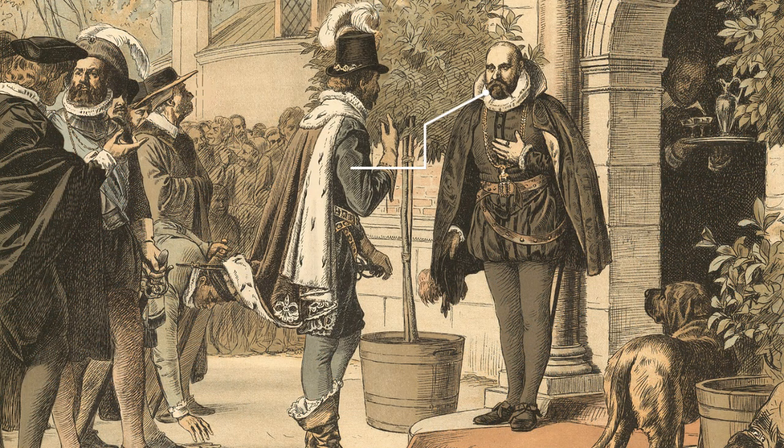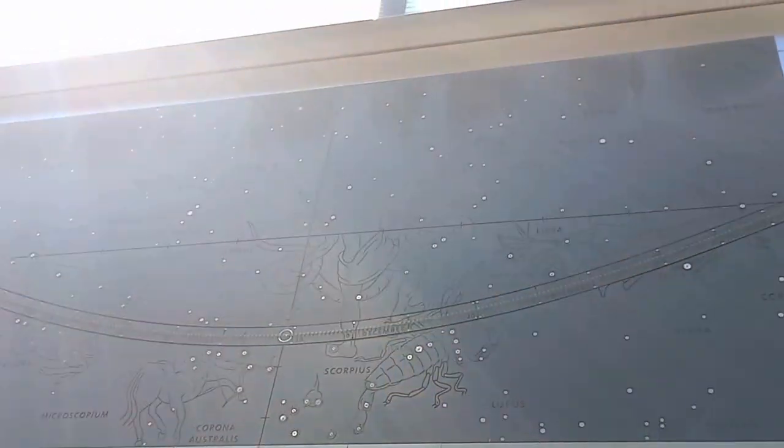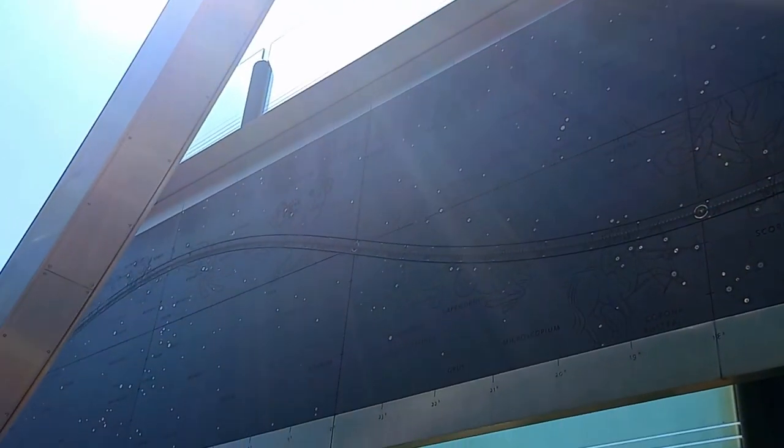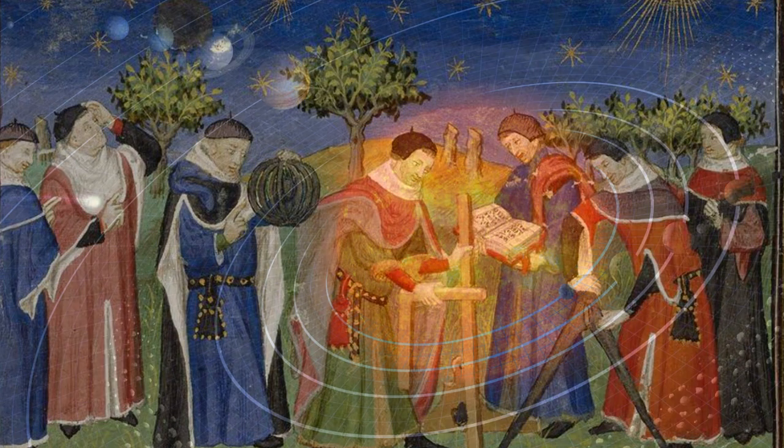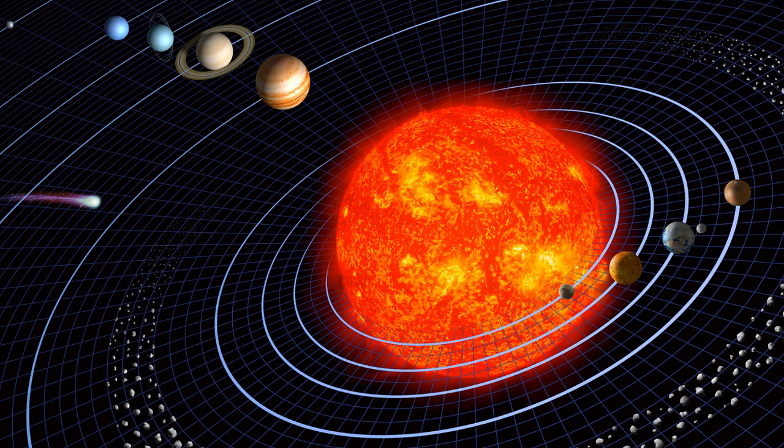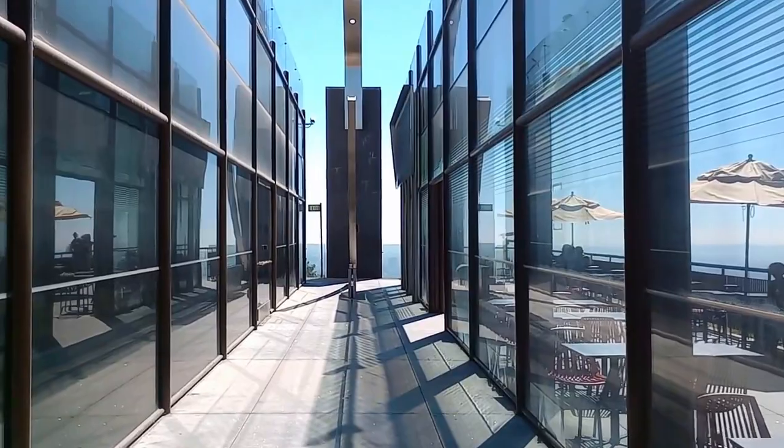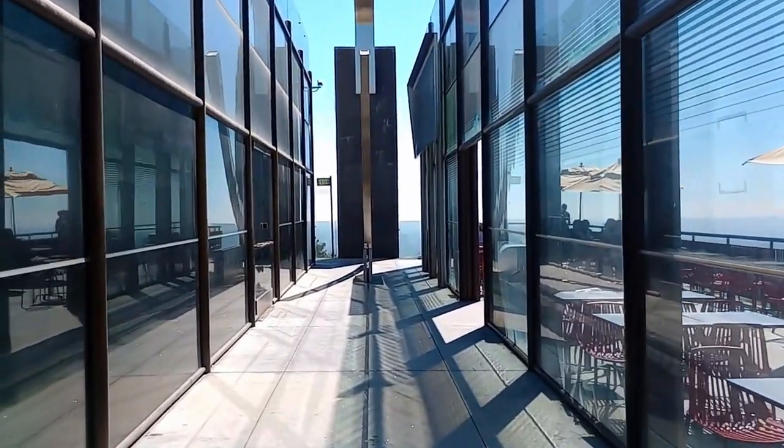16th century astronomer Tycho Brahe sought accuracy in studying the sky. His engraved metal quadrant allowed precise measurements, setting new standards. Observers in his time recorded celestial objects' positions and time as they crossed the north-south meridian. Griffith Observatory's Gottlieb Transit Corridor carries on Brahe's legacy as a modern tool for tracking the sky.